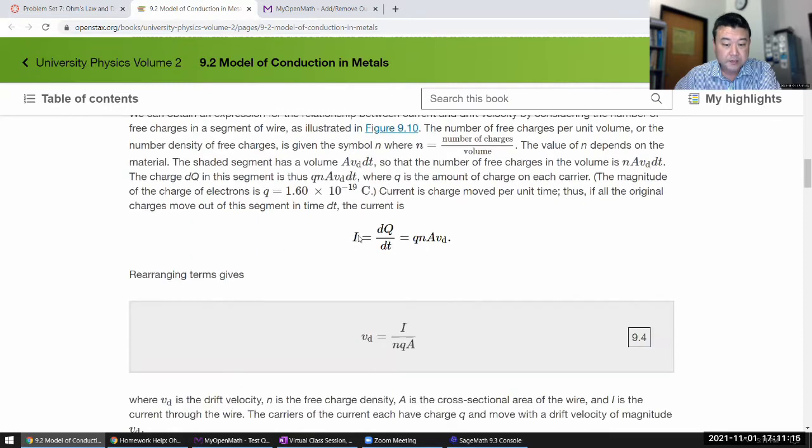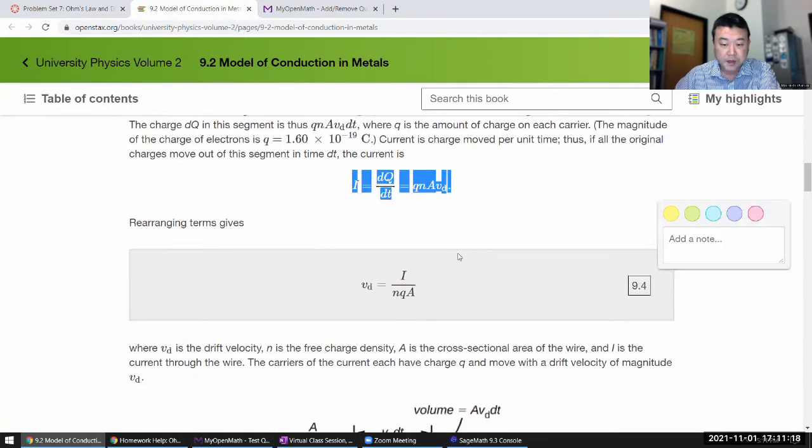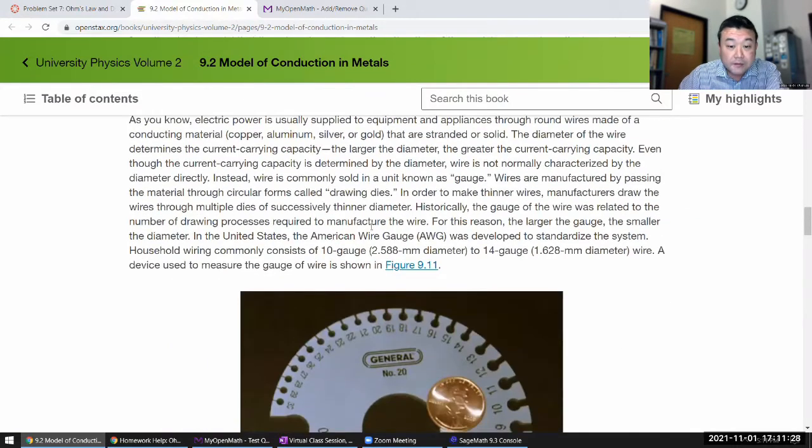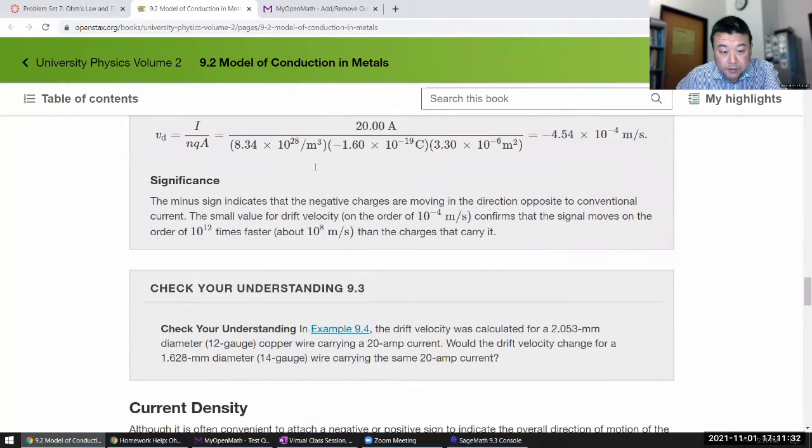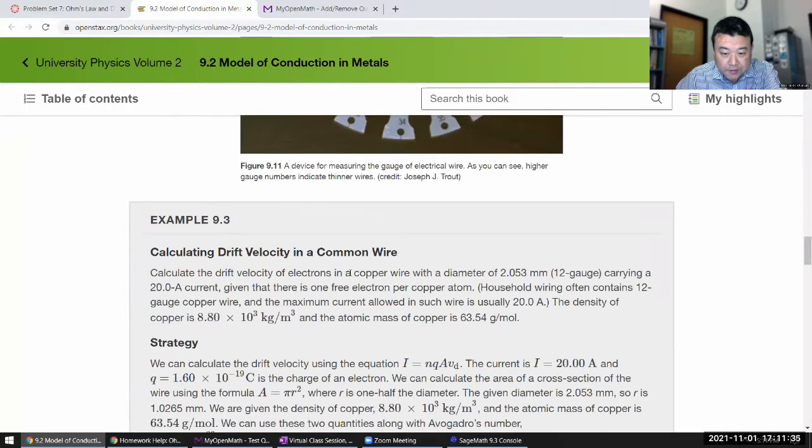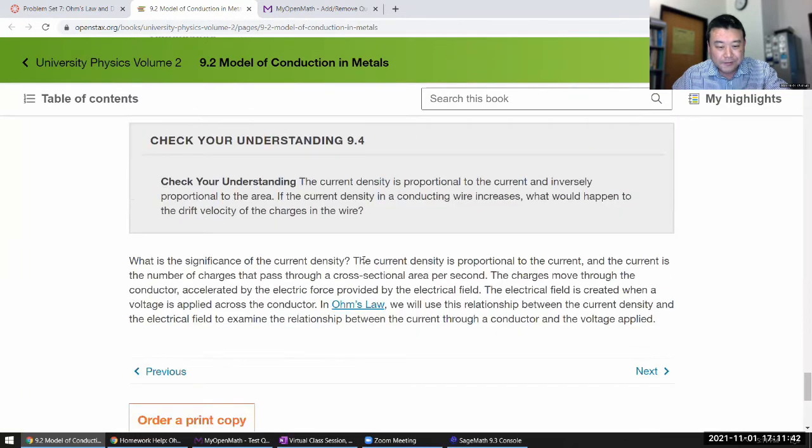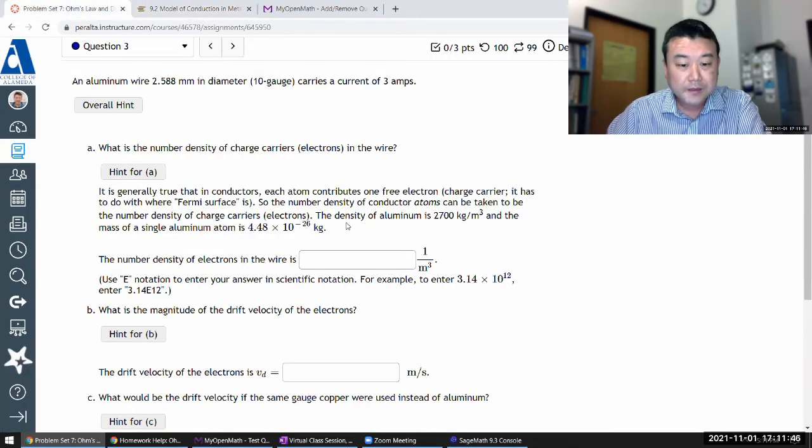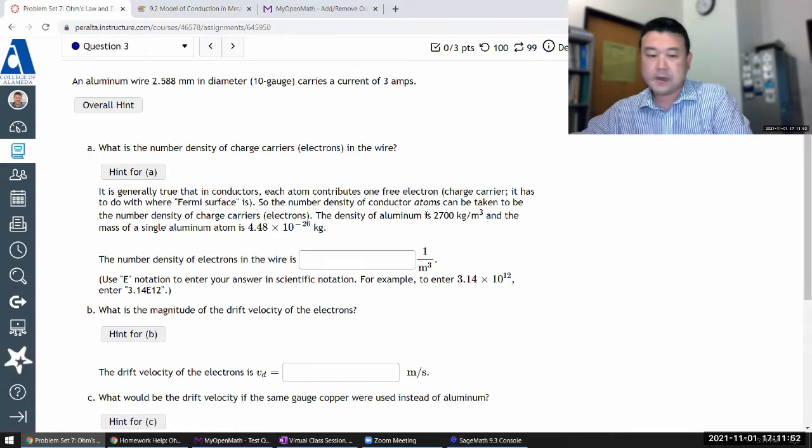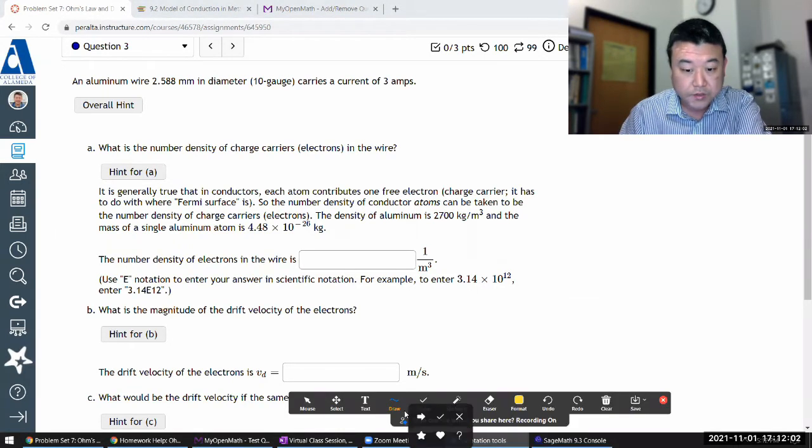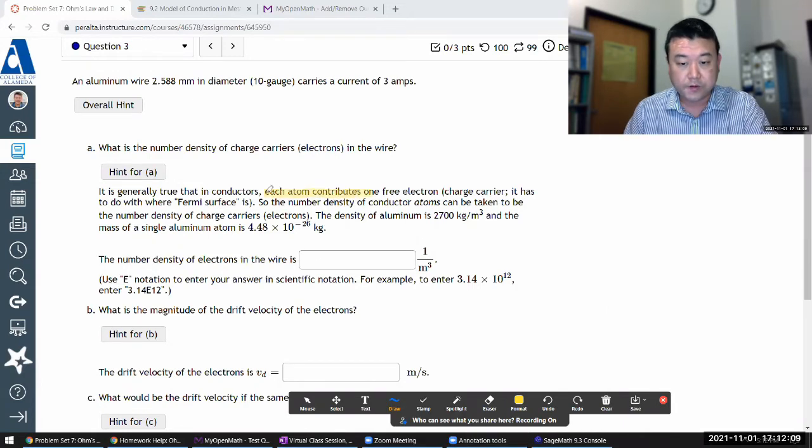So it asks, what is the number density of charge carriers in the wire? The main information you have here is that it's an aluminum wire. So let me see if the textbook section has something specific for aluminum. This is the whole conduction model.